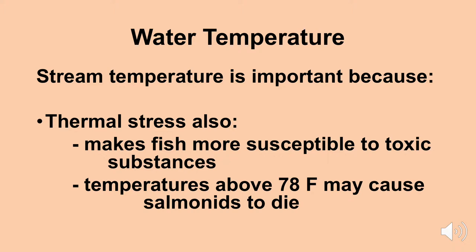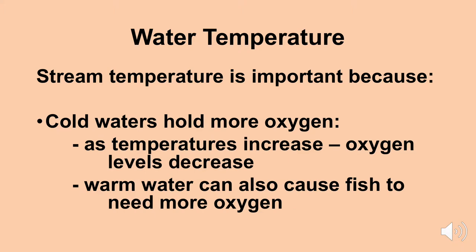Regarding thermal stress: in addition to fungal problems and lack of dissolved oxygen, thermal stress may also make fish more susceptible to toxic substances in the water. With salmonid species, temperatures above 78 degrees Fahrenheit may cause salmon to die. Cold waters hold more oxygen; as temperatures increase, oxygen levels decrease. Warm water also causes fish to need more oxygen — growth stage studies have shown that when water is warmer, fish actually need more oxygen. So there's a double-edged sword.